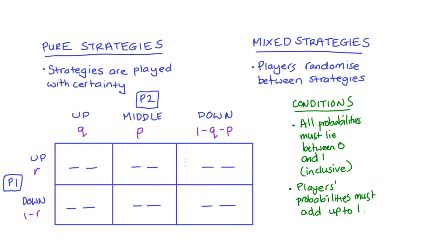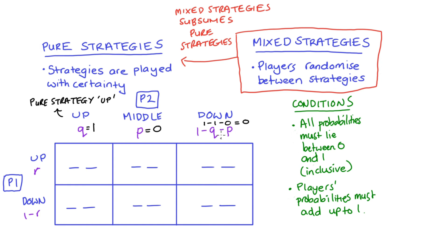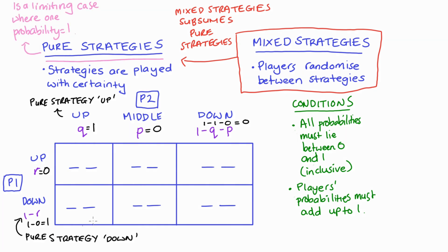The last thing I want to mention is that mixed strategy theory can describe pure strategies as well — mixed strategies subsume pure strategies, so we don't need a separate theory for pure strategies. For instance, if player two wanted to play the pure strategy up in a three-strategy game, we'd assign a probability of one to up and zero to middle and down. Similarly, if player one wanted to play the pure strategy down, we'd set r equal to zero, making the probability of playing down equal to one. Pure strategies are simply a limiting case of mixed strategies where one strategy gets a probability of one.